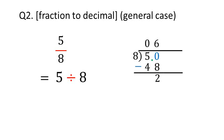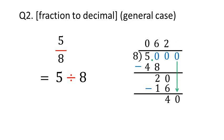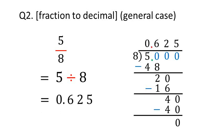Now there is no digit in hundredths, so we can place a 0 and move the 0 down. We now have 20. How many 8s can fit into 20? There are 5 eights in 40. Now there is no digit in thousandths, so we can place a 0 and move the 0 down. We have 40. How many 8s can fit into 40? There are 5 eights in 40. 8 times 5 is 40. Subtract 40 from 40, which is 0. Now the decimal point just moves up. So the answer is 0.625.